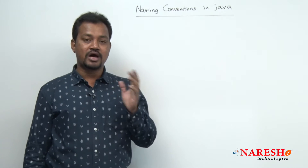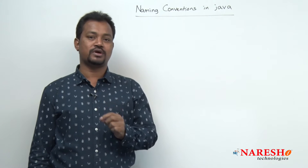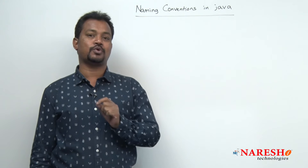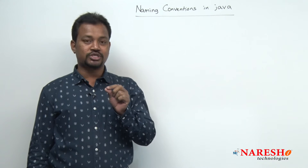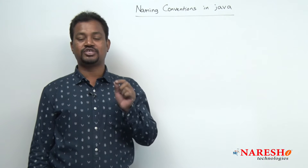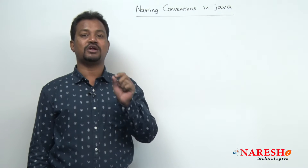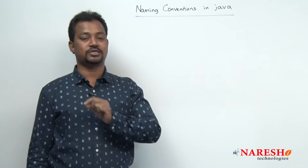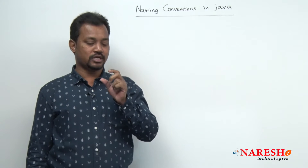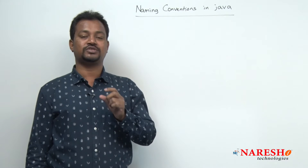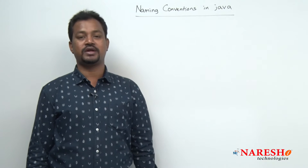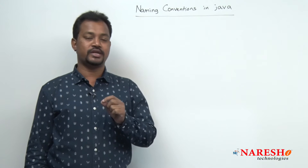In the last video, we discussed about writing one small first program in Java. In the process of writing a program, the definition of program is nothing but a set of instructions — a group of lines which are performing a task together.